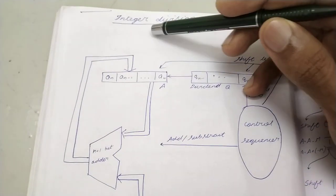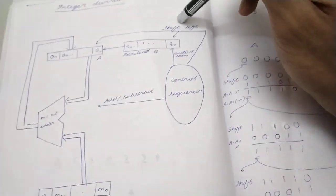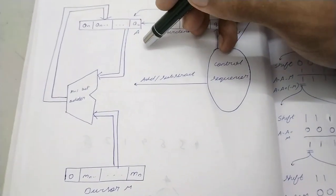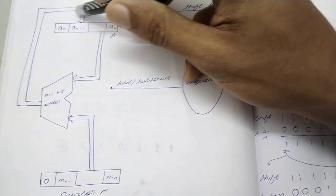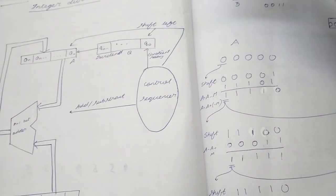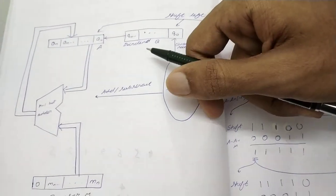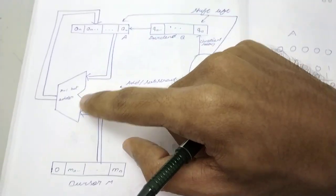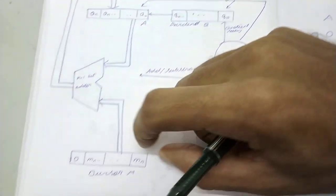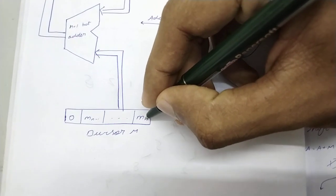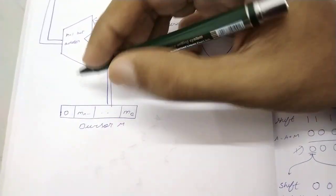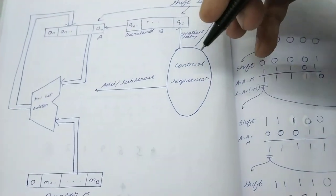In this last video, we will do the integer division. What is integer division? We have two binary numbers we have to divide. The circuit consists of an A register, a dividend Q register, and a control sequencer. It uses a shift left operator — not shift right like in the multiplier. We have add or subtract, not add or no-add. This is an n+1 bit adder; A is also n+1 bits, a0 to an. The divisor M is m0 to mn-1 with an appended 0, making it n+1 bits as well.